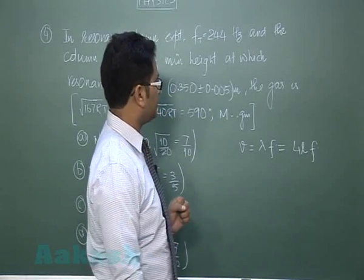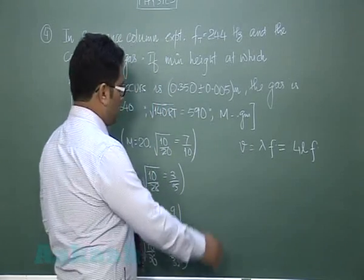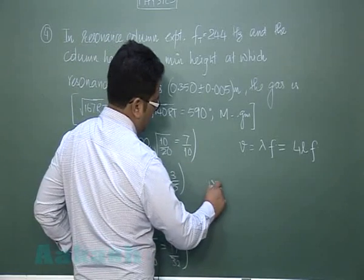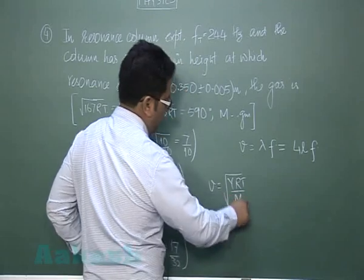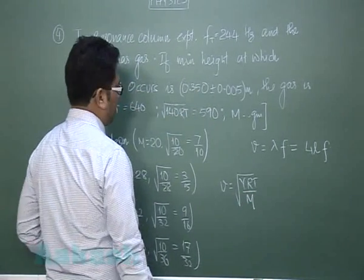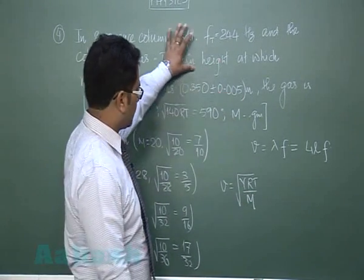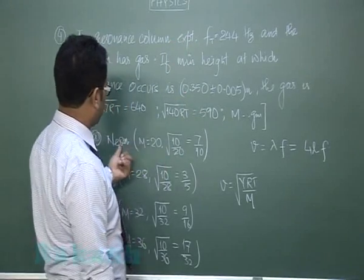To equate it, then you would see V equals root of gamma RT by m. So for example, you find speed from the first data and now you are verifying whether it's neon or not.